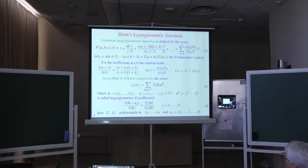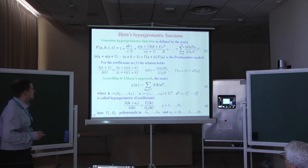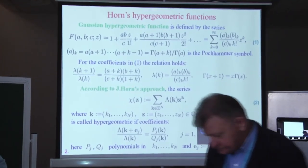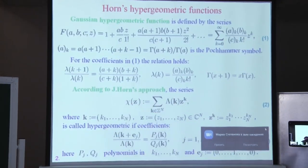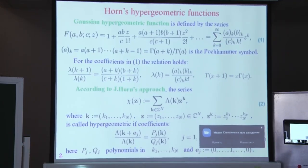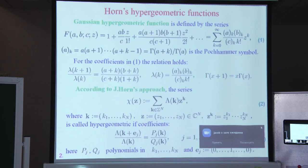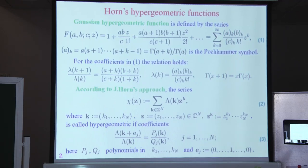My talk is devoted to some recent results in solving the problem of analytic continuation of hypergeometric functions in many variables. For a function which is defined by a series with a finite domain of convergence, this issue is one of the most important. In our talk, we will draw some parallels with results well known in the theory of the classical Gaussian hypergeometric functions.